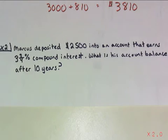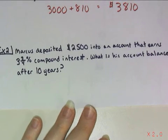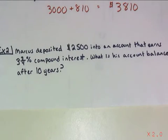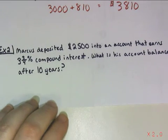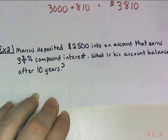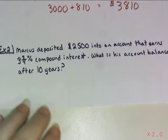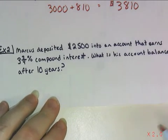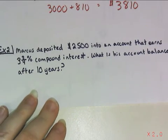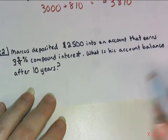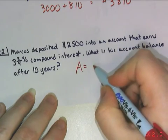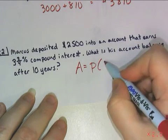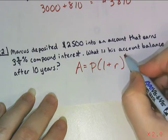In this next example, Marcus deposits twenty-five hundred dollars into an account that earns three and three-quarters percent compound interest. What is his account balance after ten years? The extra part of the formula we mentioned earlier relates to how often you compound interest. In the examples we're working with, we're only compounding once a year — annually — so the formula A equals P times one plus r to the power of t applies.